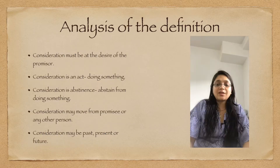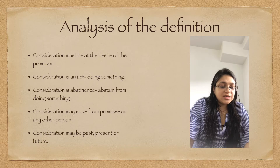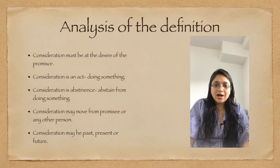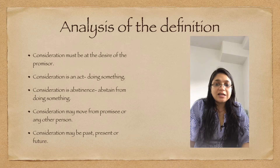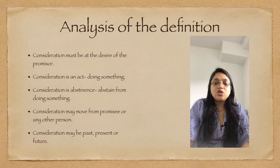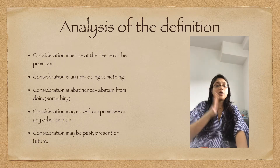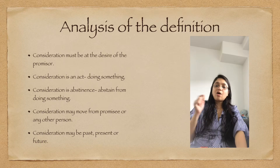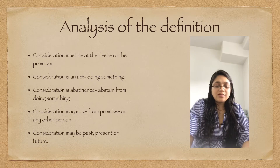Now let's break the definition into smaller points. First: consideration must be at the desire of the promisor — the consideration must come through the promisor's wish. For example, A offers B 'I want to buy your red car.' B has two cars — one red and one blue. A offers to buy the red car for rupees five lakh. B accepts the offer but says he wants to give the blue car for five lakh. That is not a valid consideration, because the offer was for the red car — the offerer wants the red car in return for rupees five lakh. So the red car will be valid consideration for A, not the blue car.